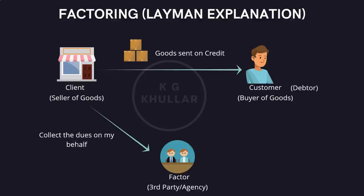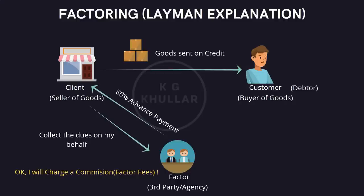The factor is given the powers and authority by the seller to collect the money on his behalf from the debtors. No one will give any service for free, so this agent or factor will charge a commission or factor fee for its services to the client i.e. seller. Not only this, the factor will also provide some percentage of advance — say 80% of the receivable — to the client i.e. seller. So both problems get solved: your funds are not blocked since the factor is paying you 80% advance, and your headache of knocking the doors of customers is also gone. It is now the job of the factor to recover the amount from the customer. This whole arrangement in financial terms is defined as factoring.